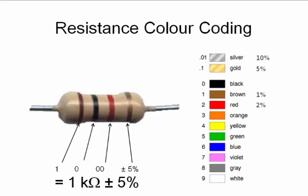So you can interpret the colors to get the value and the tolerance. Does this make sense everyone?